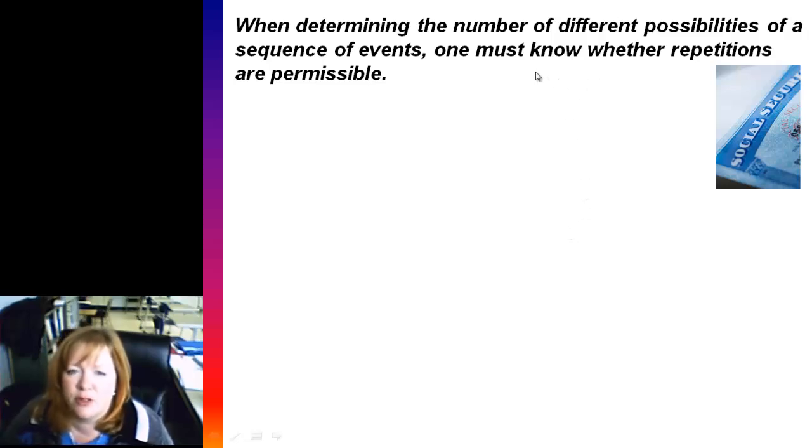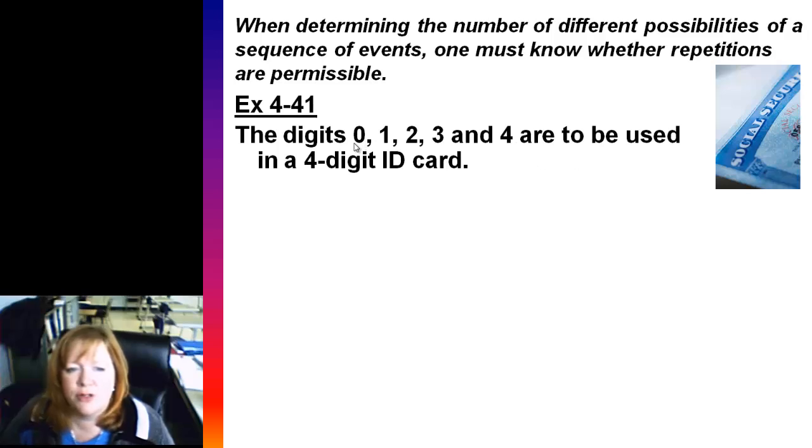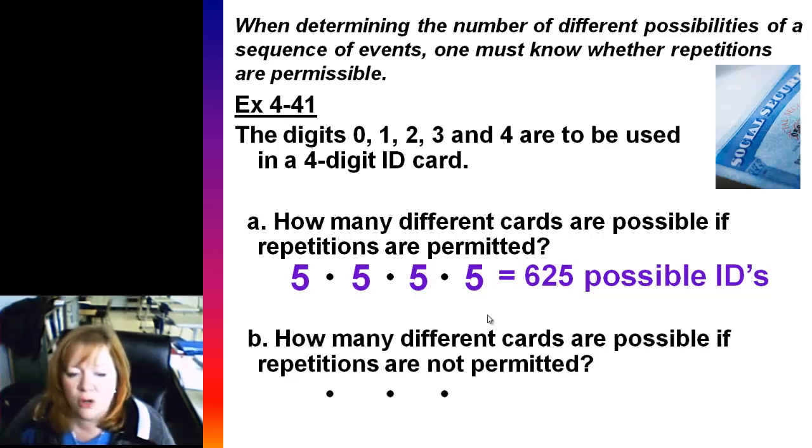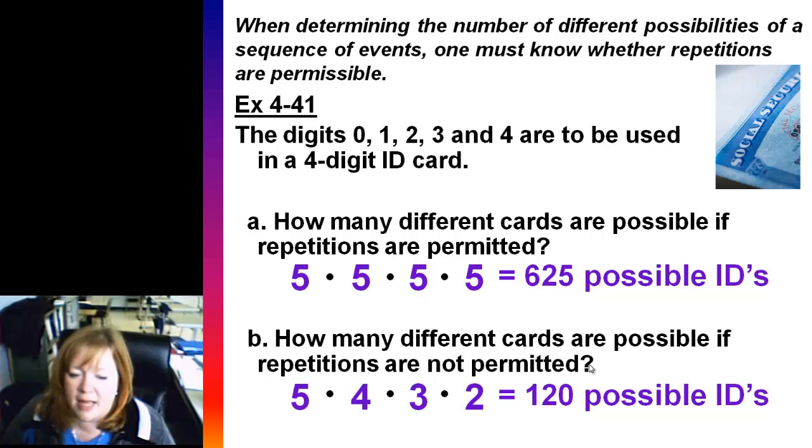When determining the number of possibilities of a sequence, you've got to know whether you can repeat a digit or an outcome or whatever, if repetitions are possible. So here we've got an ID card, a four digit ID card. If you can repeat any digit, then every time you pick a digit for your ID, you can pick from zero to four. So if repetitions are permitted, you'd have five choices for the first digit, five choices for the second, five choices for the third, and five choices for the last digit. So you'd end up with a total of 625 possible IDs. If you don't allow repetition, then you can still pick zero to four for the first digit, but you can only pick four of those for the next digit, three of those for the next digit, and two of those for the last digit. That cuts down that possible ID numbers a lot, almost by a third, well, more than by a third. It's 120 possible IDs.